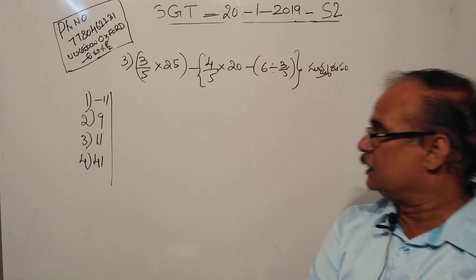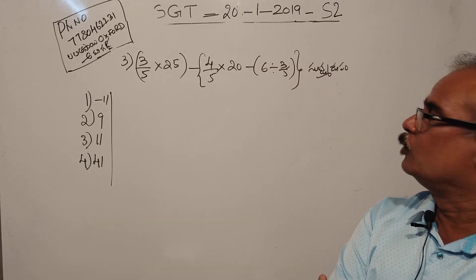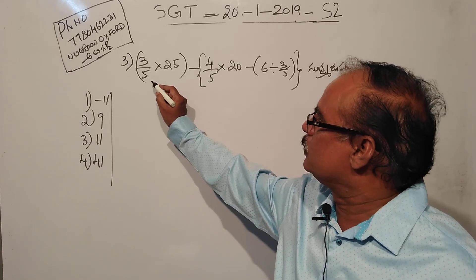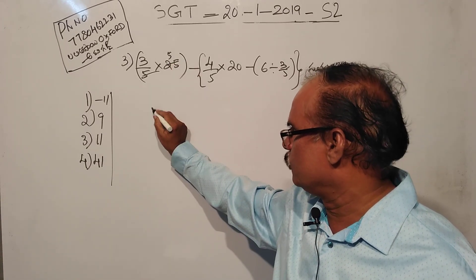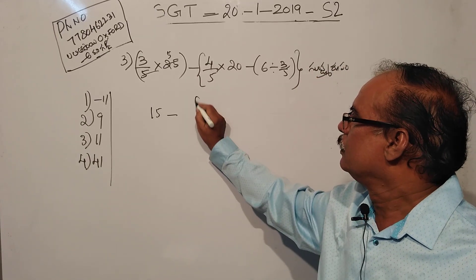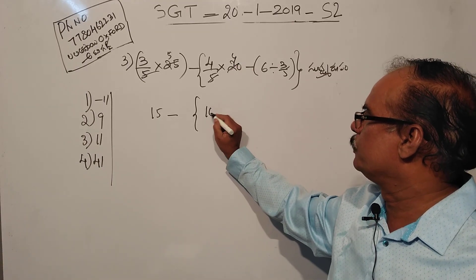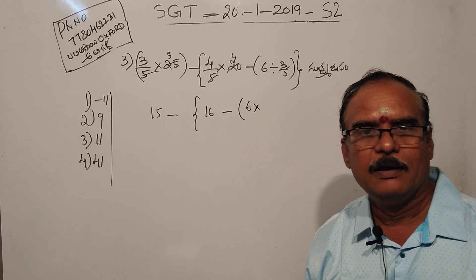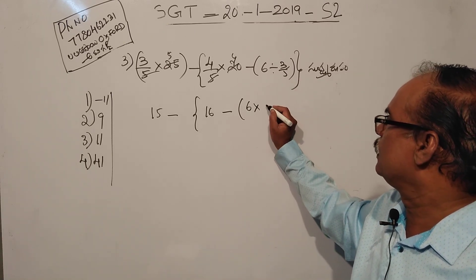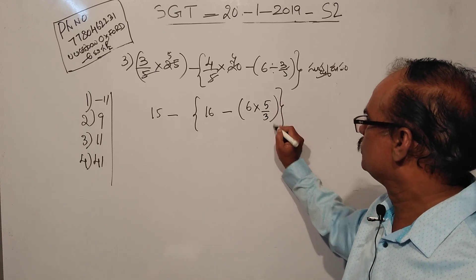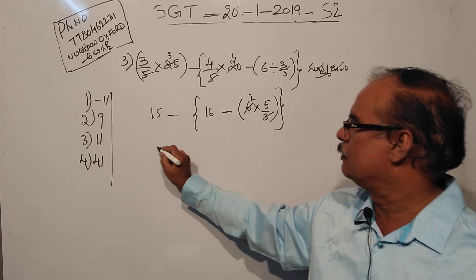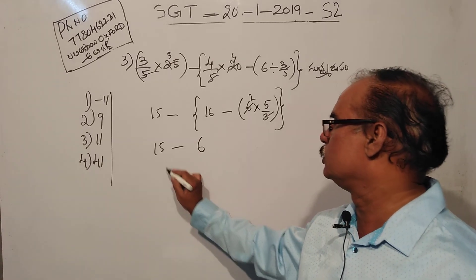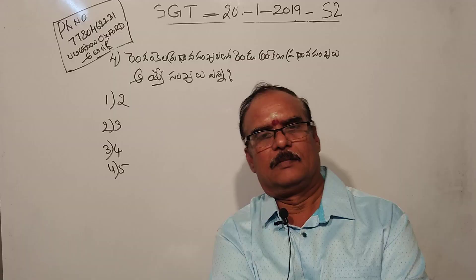3020 into 25 minus 4020 minus 6, divided by 3020 — this is the third option. 3020 into 25 minus 6 divided by 3020. 15 minus 16 is 25, 10 is R. 4 is R. The answer is 11, and that is the third option. Next question.